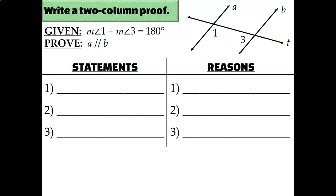Let's try a three-step proof. Copy and paste your given statement on number 1 and write 'given' for your first reason. Unfortunately, there's nothing really to label on the diagram this time — we're told that angle 1 and angle 3 add up to 180 degrees, but we weren't actually told what they measure, so there's nothing to write on the diagram.